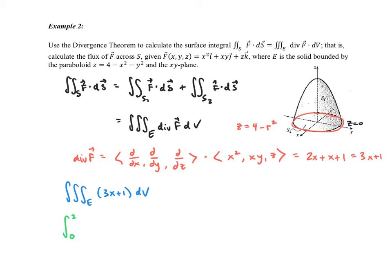z equal to 4 minus x squared minus y squared is really z equal to 4 minus r squared. If z is 0, then that's just r squared equal to 4. So we have a circle with radius 2. r is between 0 and 2.